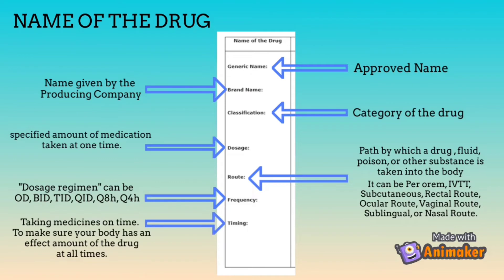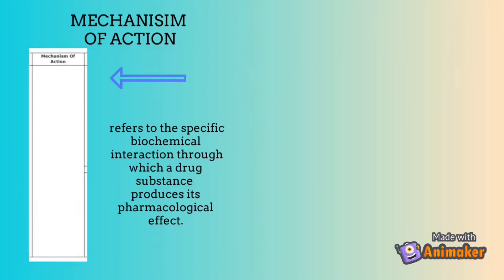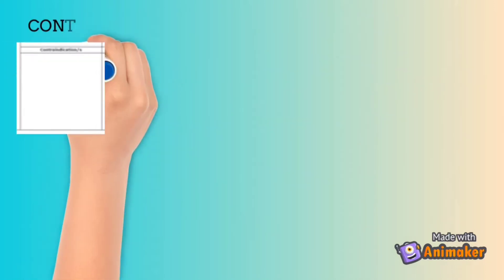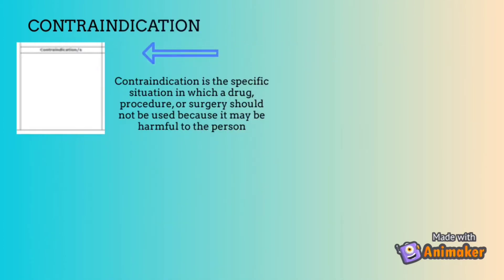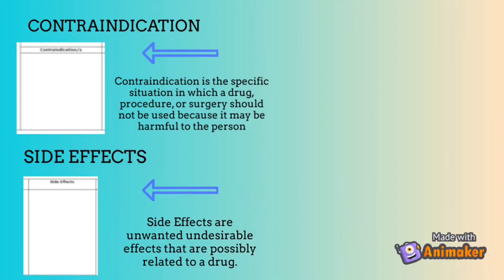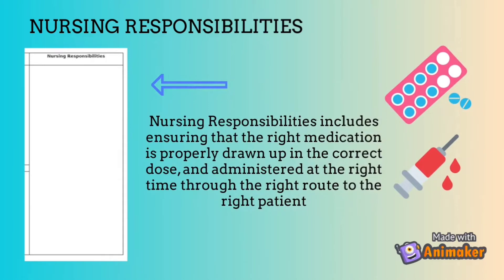Next is timing — taking medicine at the time prescribed is essential. Mechanism of action refers to the specific biochemical interaction through which a drug substance produces its pharmacological effect. Indication is the use of a drug for treating a particular disease. Contraindication is the specific situation in which a drug, procedure, or surgery should not be used because it may be harmful. Side effects are unwanted, undesirable effects possibly related to a drug. Adverse effects can be an appreciably harmful or unpleasant reaction. Nursing responsibilities include ensuring the right medication is properly drawn up in the correct dose and administered at the right time through the right route to the right patient.